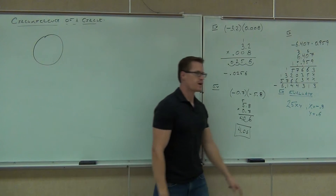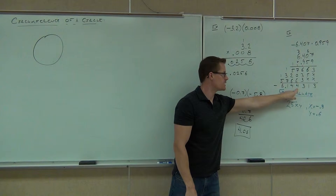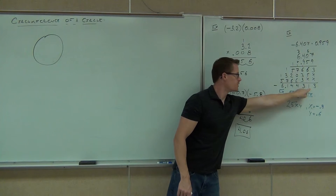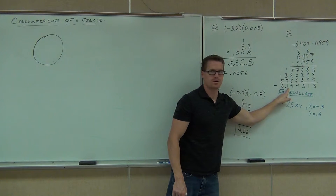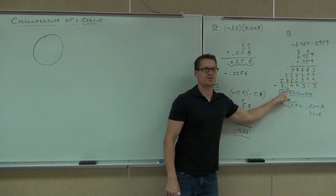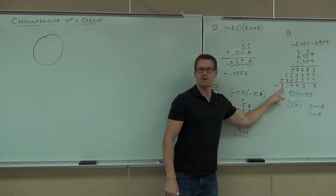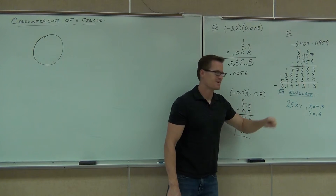What place value is this digit? Thousandths — good. Someone else: what place value is this one? Hundred thousandths. How about this one? Hundreds. Where are the ones? Those are ones. Do you feel okay with it?